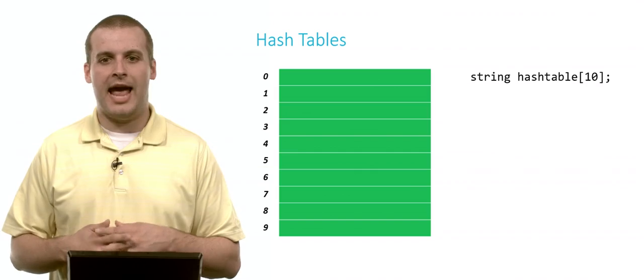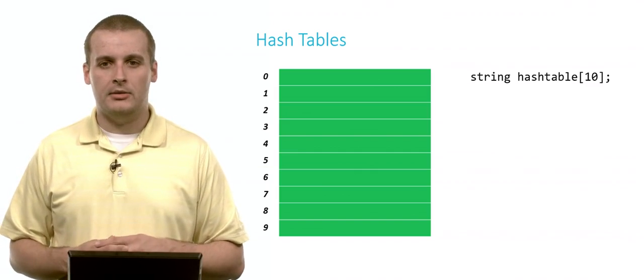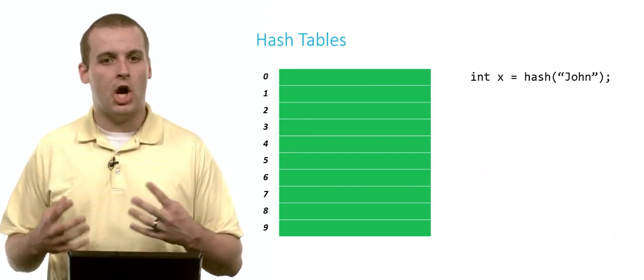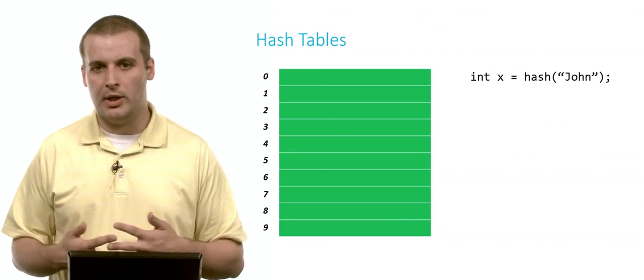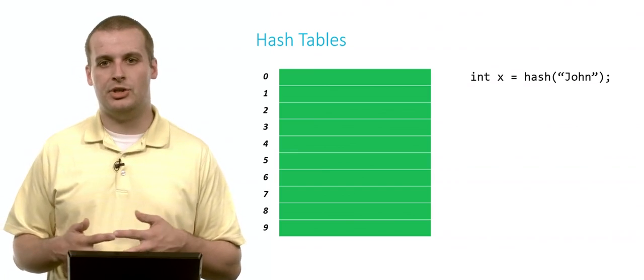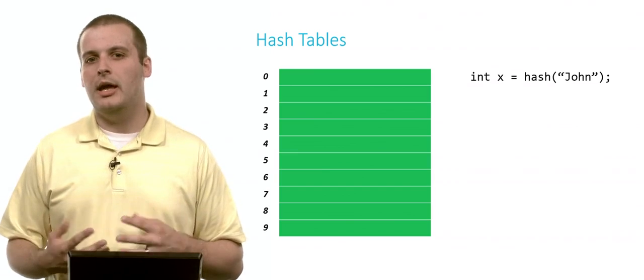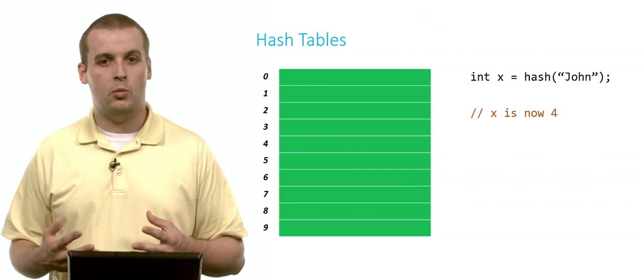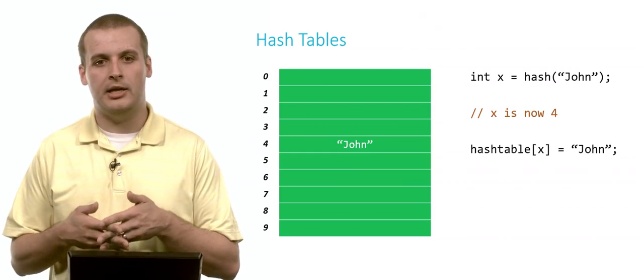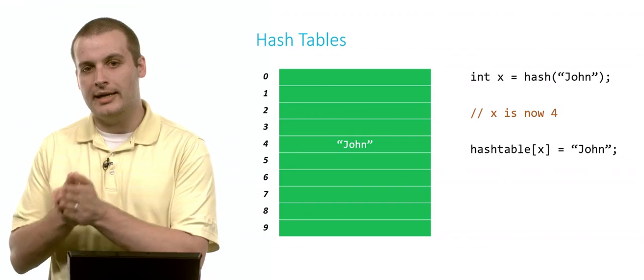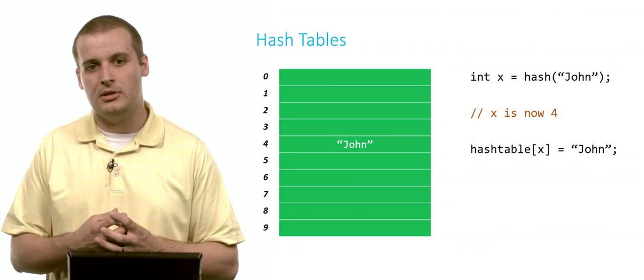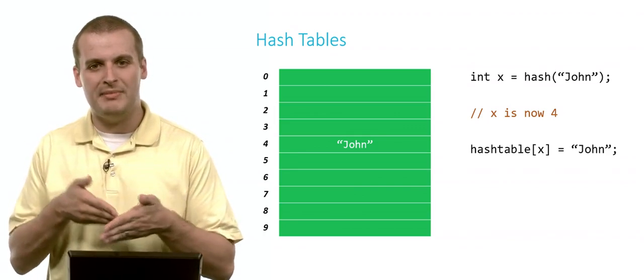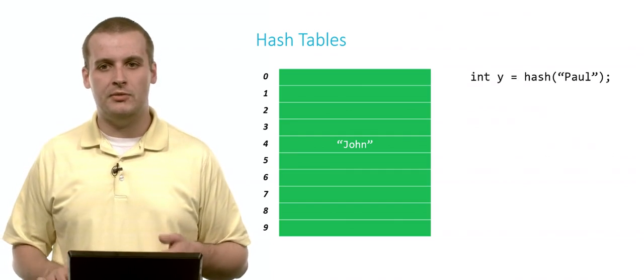We have maybe this hash table of strings. It's got 10 elements in it. Let's say we want to hash John, so John is the data we want to insert. We run John through this hash function, and it spits out 4. That's where we're going to want to put John, in array location 4. Because if we hash John again later when we want to search and see if John exists in this hash table, all we need to do is run it through the same hash function, get the number 4 out, and we'll be able to find John immediately in our data structure.